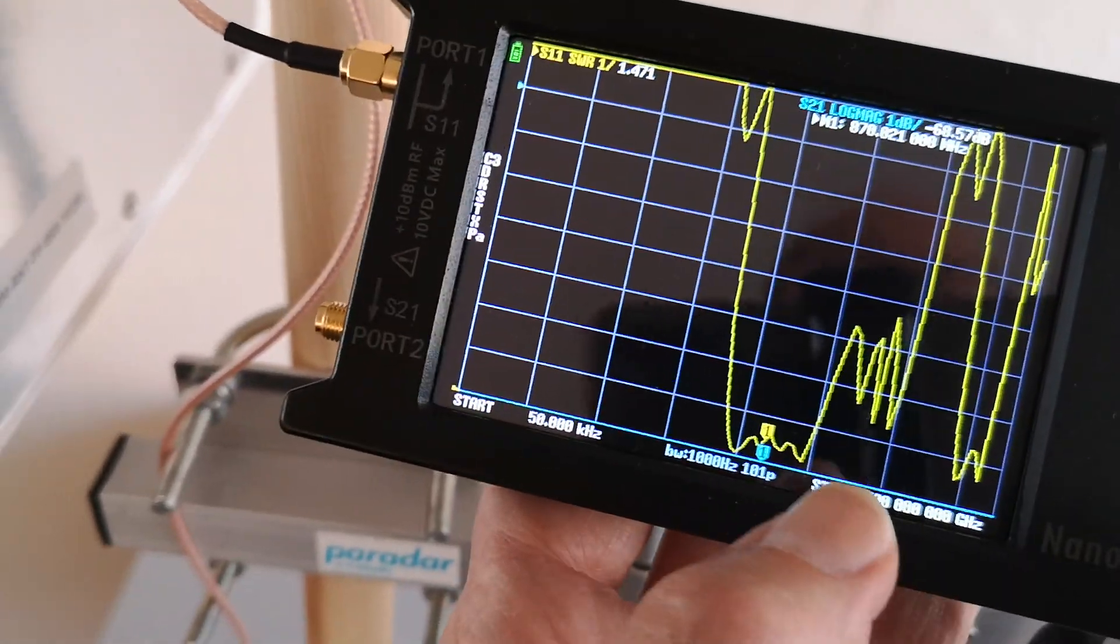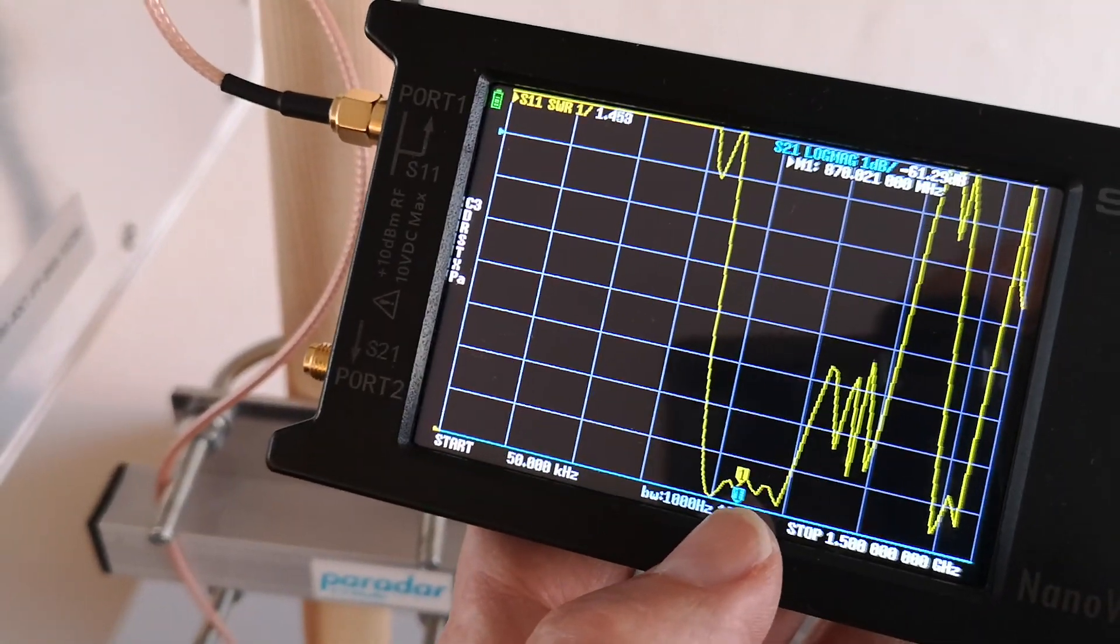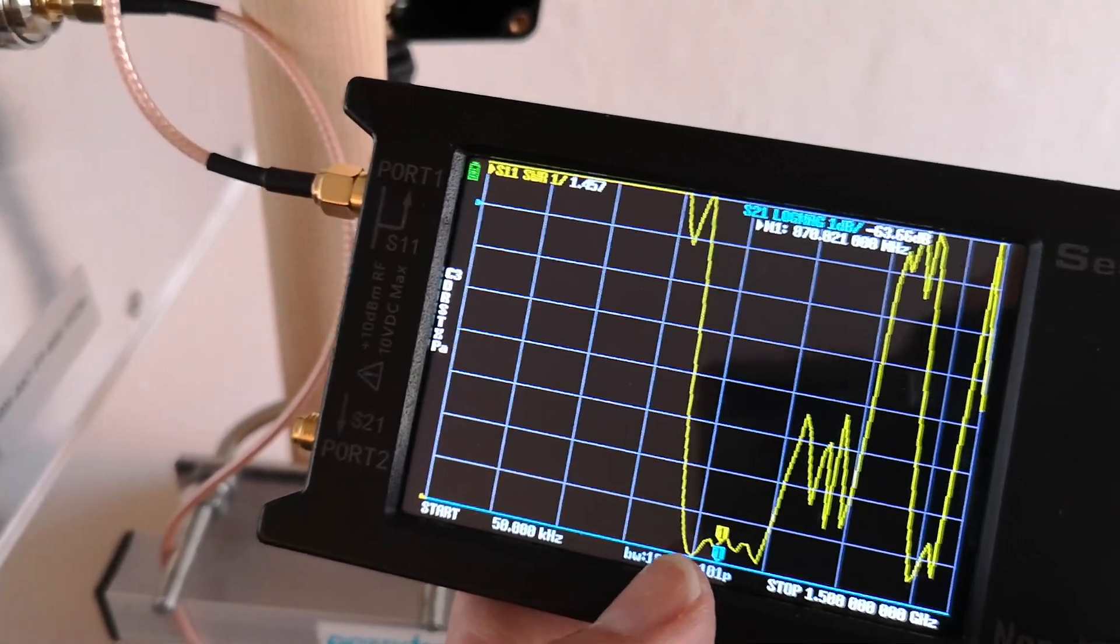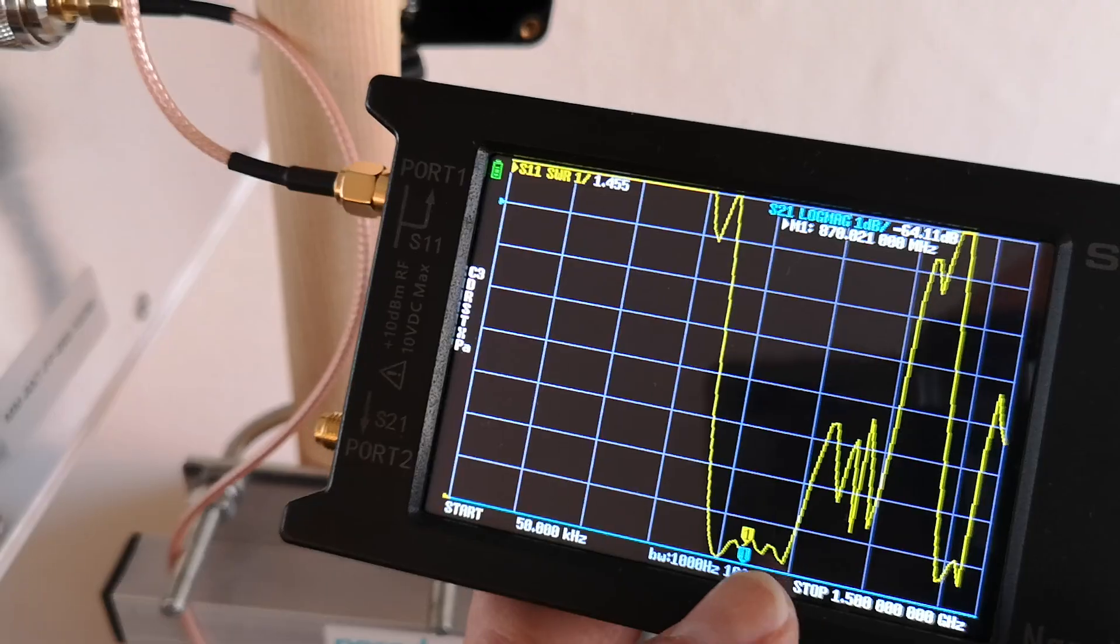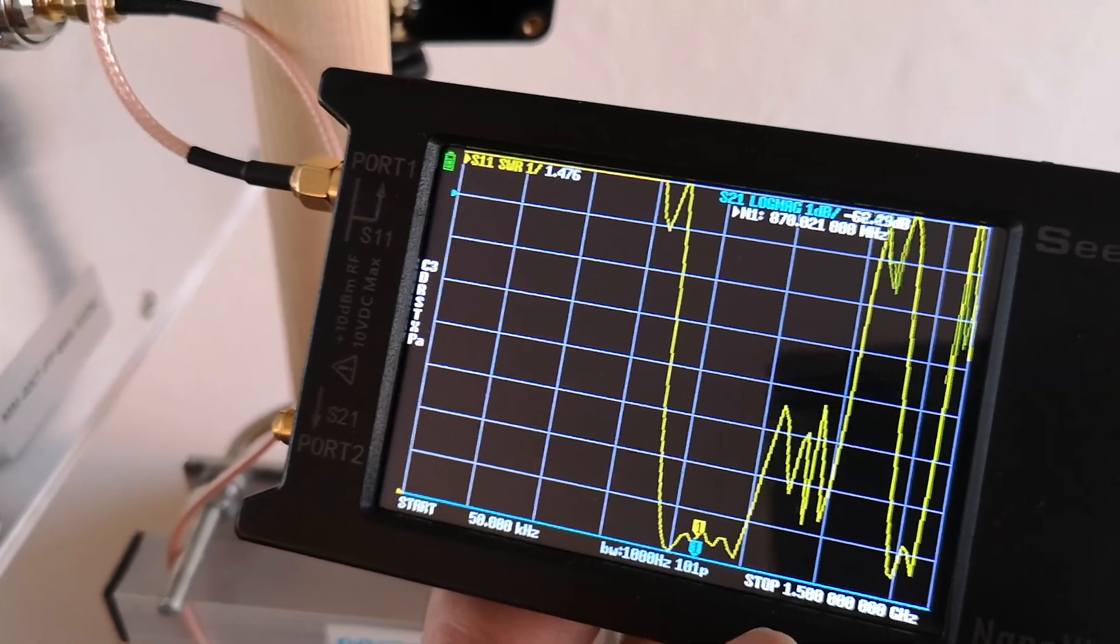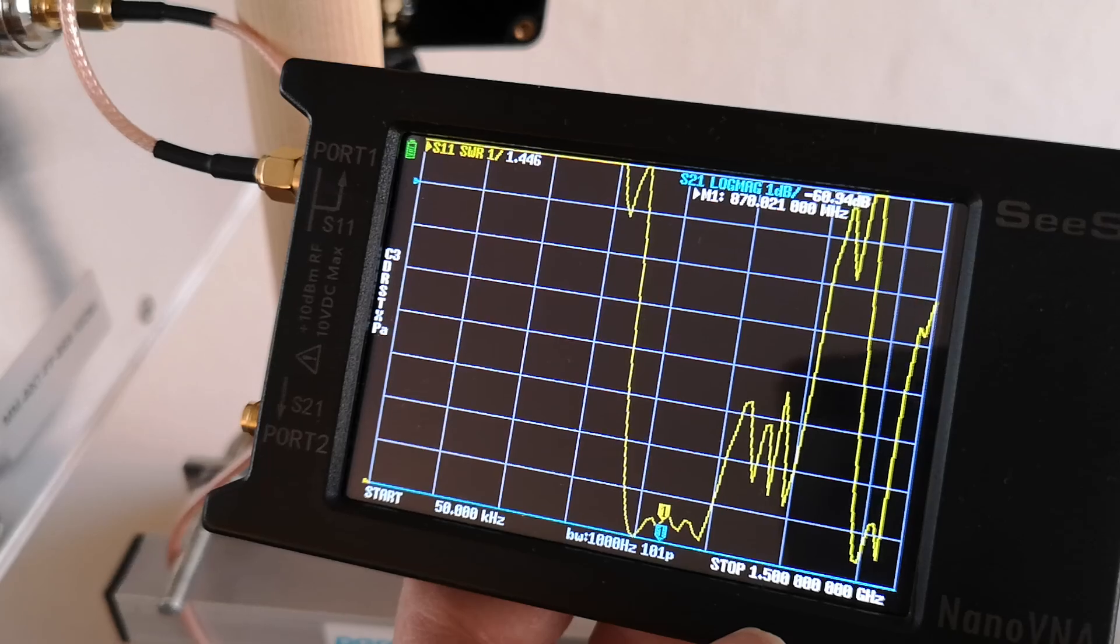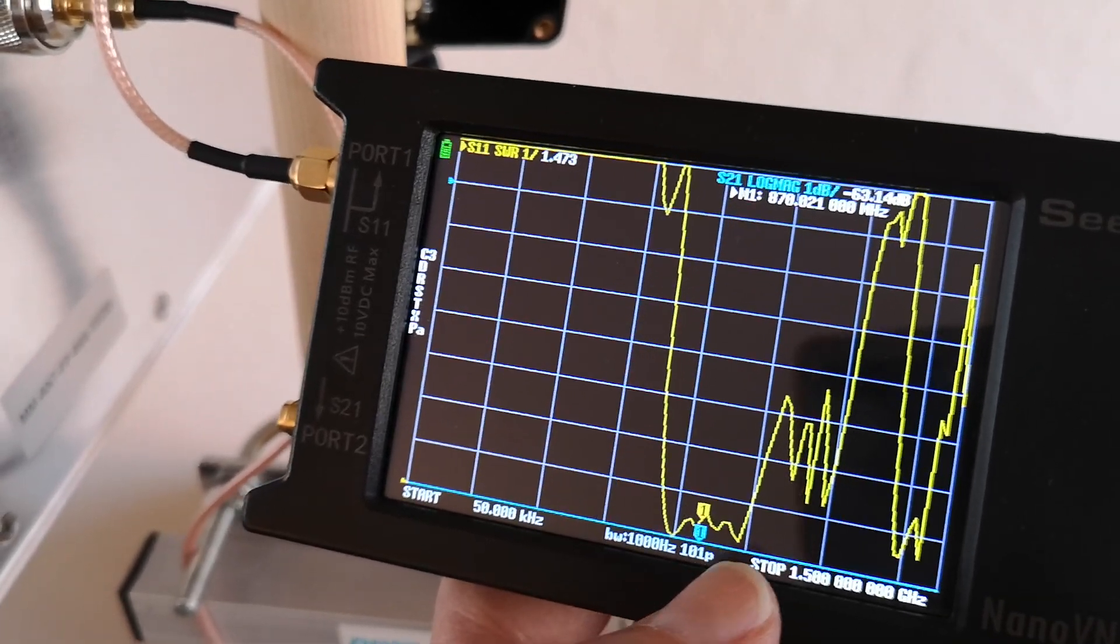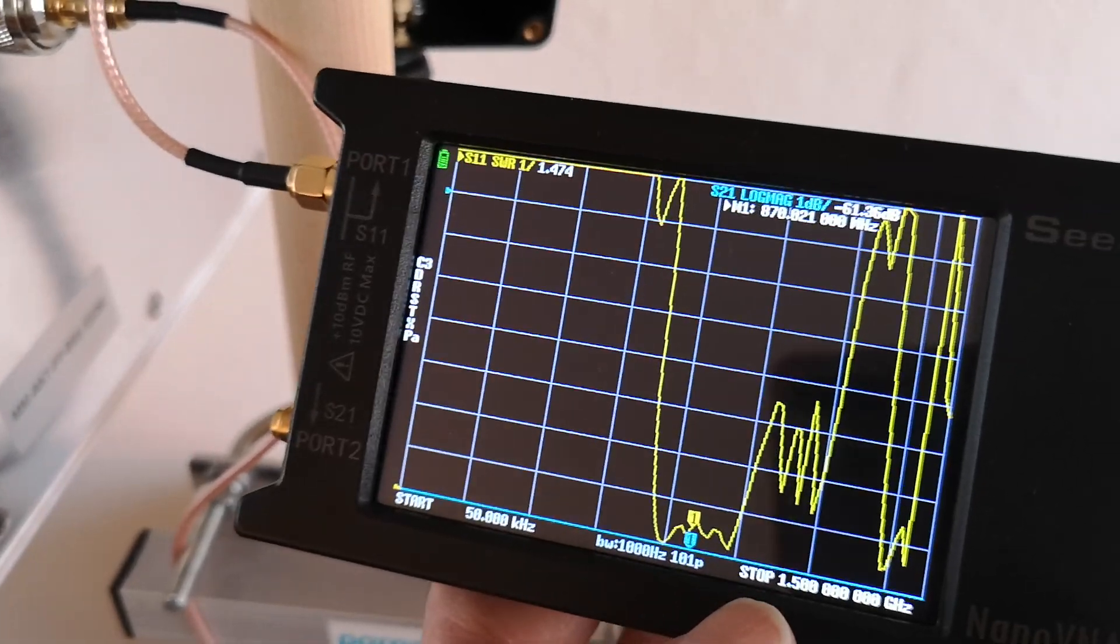And as you can see, the marker there is still at 870 MHz, the frequency of interest. But this is really nice. I mean, we were looking just at that part of the curve on the previous shot, and now you can see it over 0 to 1.5 GHz frequency range. And this is really well matched at quite a wide bandwidth of frequencies.